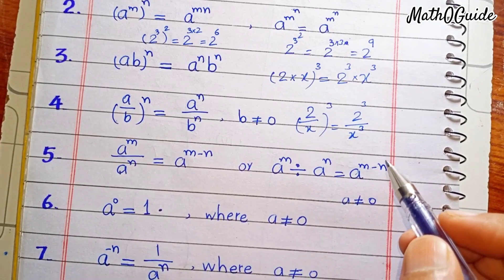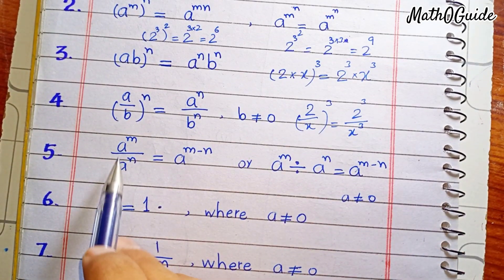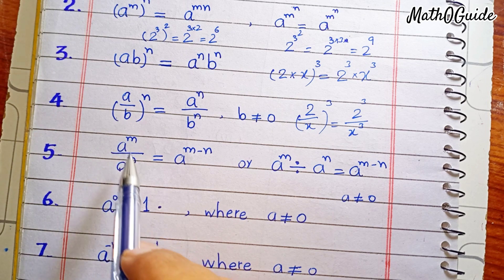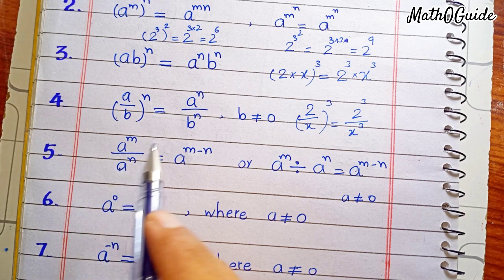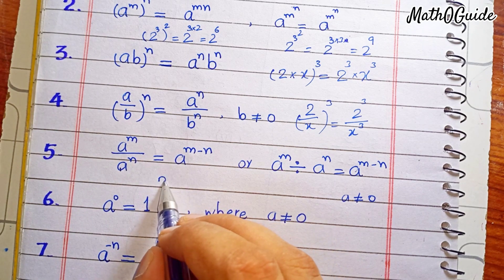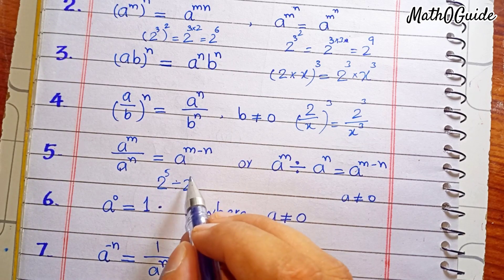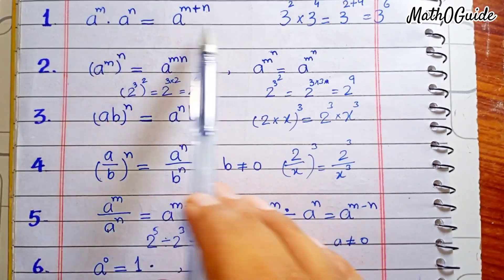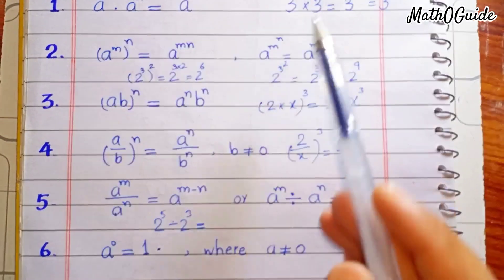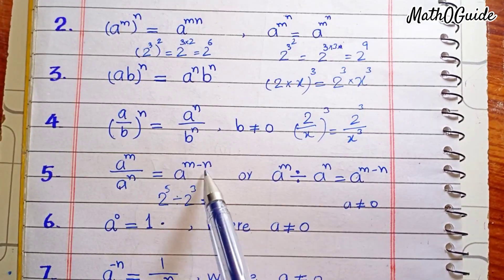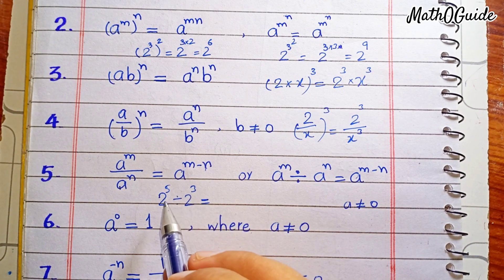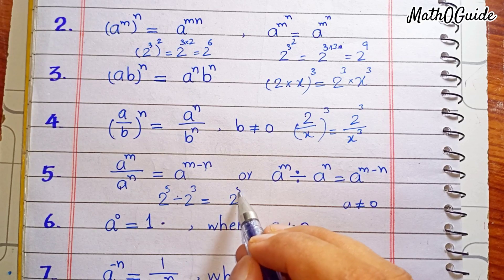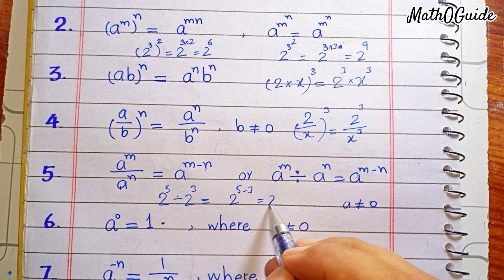The next rule is when we have the same base but with a division process and different powers. For example, 2 raised to power 5 divided by 2 raised to power 3. In multiplication we add powers, but in division we subtract the powers. So 2 raised to power 5 minus 3 equals 2 raised to power 2.